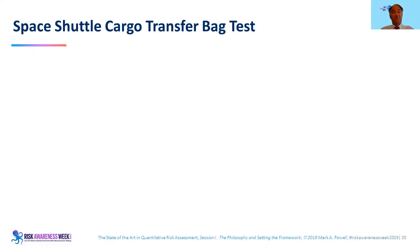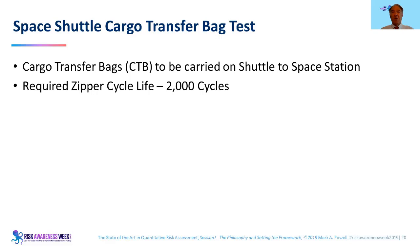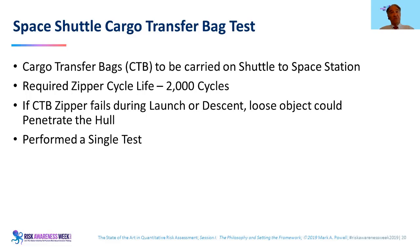They ran a test. The problem: if the zipper fails on the Space Shuttle during launch or landing, something could break out of the bag, pierce the hull, and as we know when that happens, we lose the whole vehicle and crew — a terrible disaster. The required zipper life specification was survival to 2,000 cycles, presumed to be 100% reliability, but not stated in probabilistic terms. If it fails, a loose object could penetrate the hull just like what happened with Challenger and Columbia.